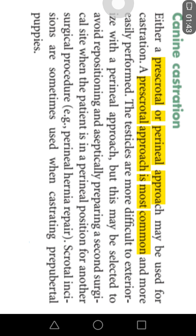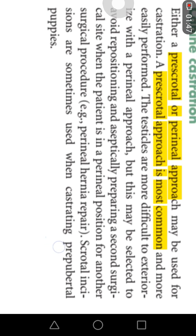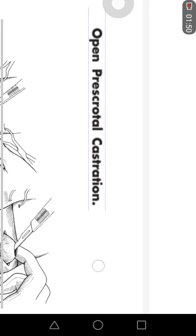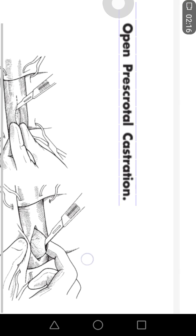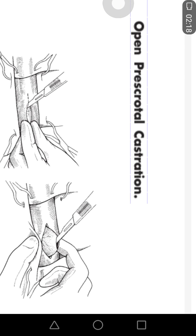The pre-scrotal approach is further divided into open and closed pre-scrotal castration. The difference between these two approaches is the incision into the tunica vaginalis. If the testes are removed after incising the tunica vaginalis, it is called open pre-scrotal castration. If the testes are removed while still embedded within the tunica vaginalis, it is called closed pre-scrotal castration.